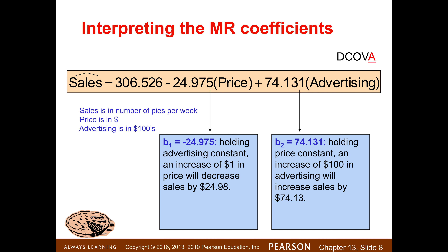B2 for advertising follows the same logic — holding the other variable, price, constant. Advertising is measured in hundreds of dollars, so an increase of $100 in advertising will increase sales by 74.13 pies per week — not by $74.13. Again, there's a typo in the textbook there.